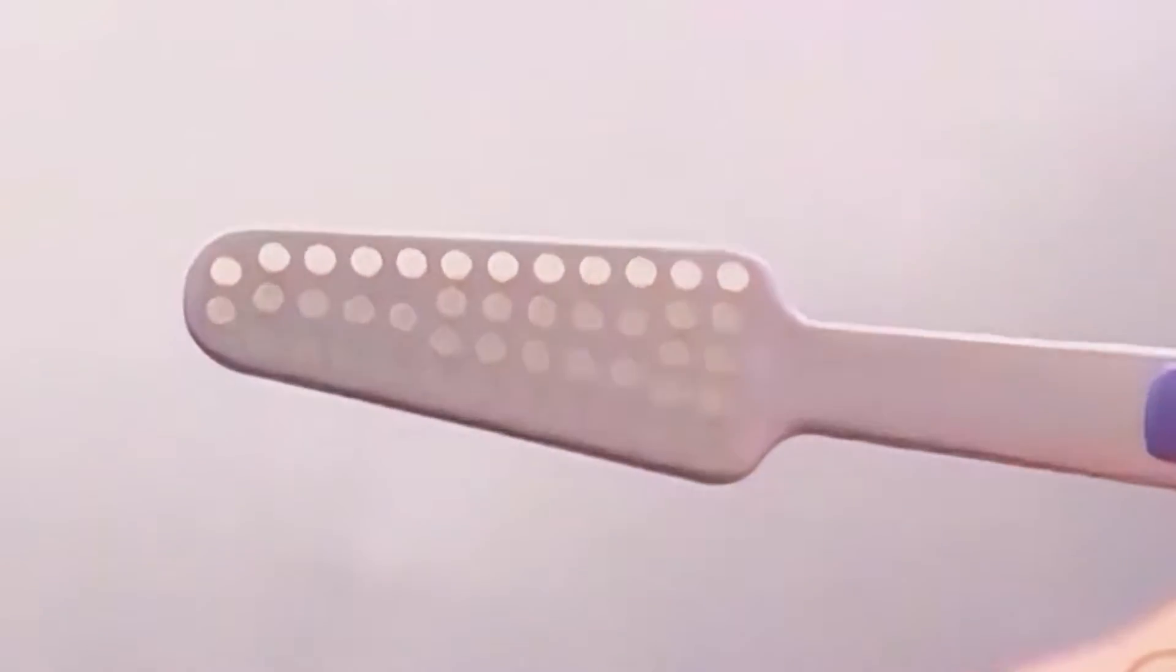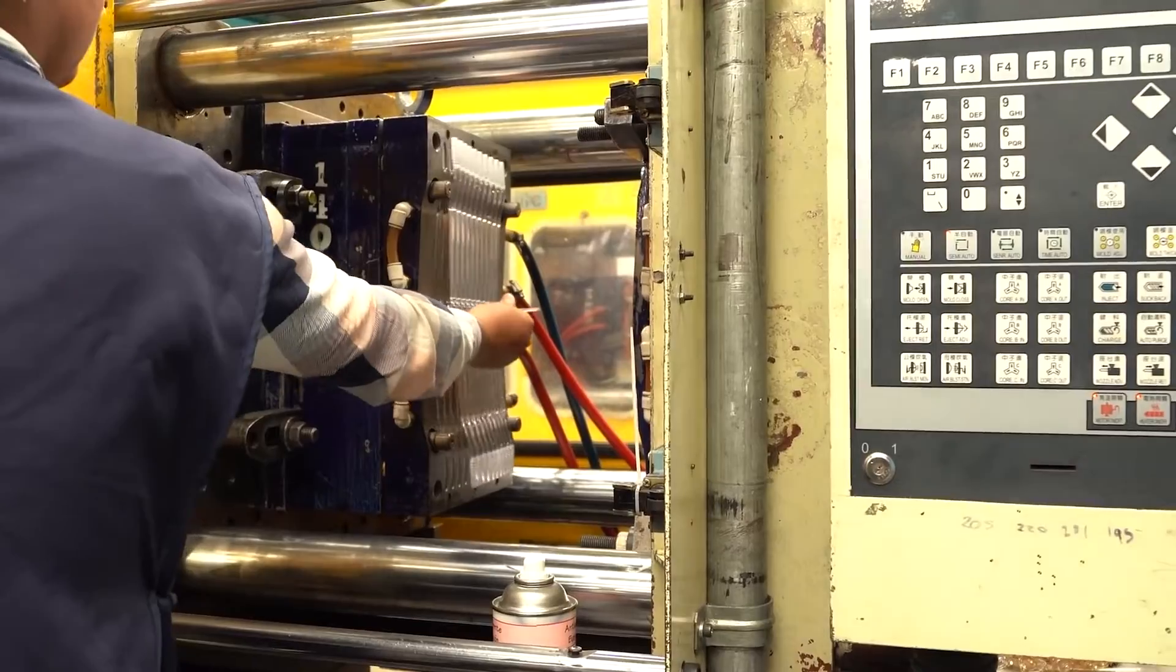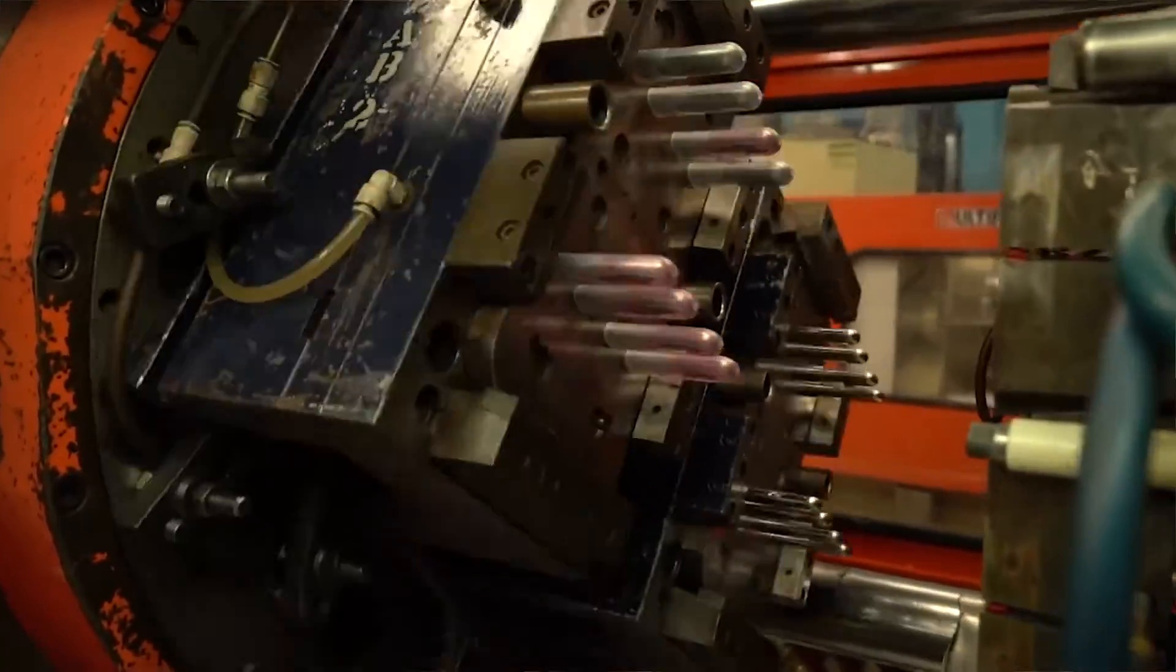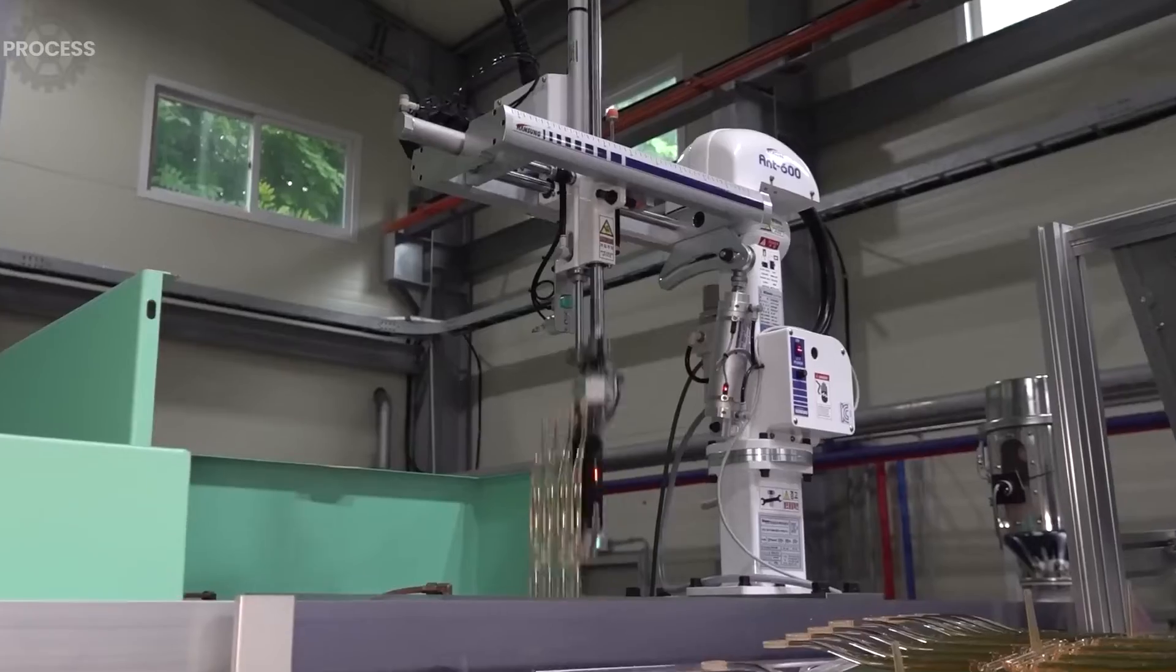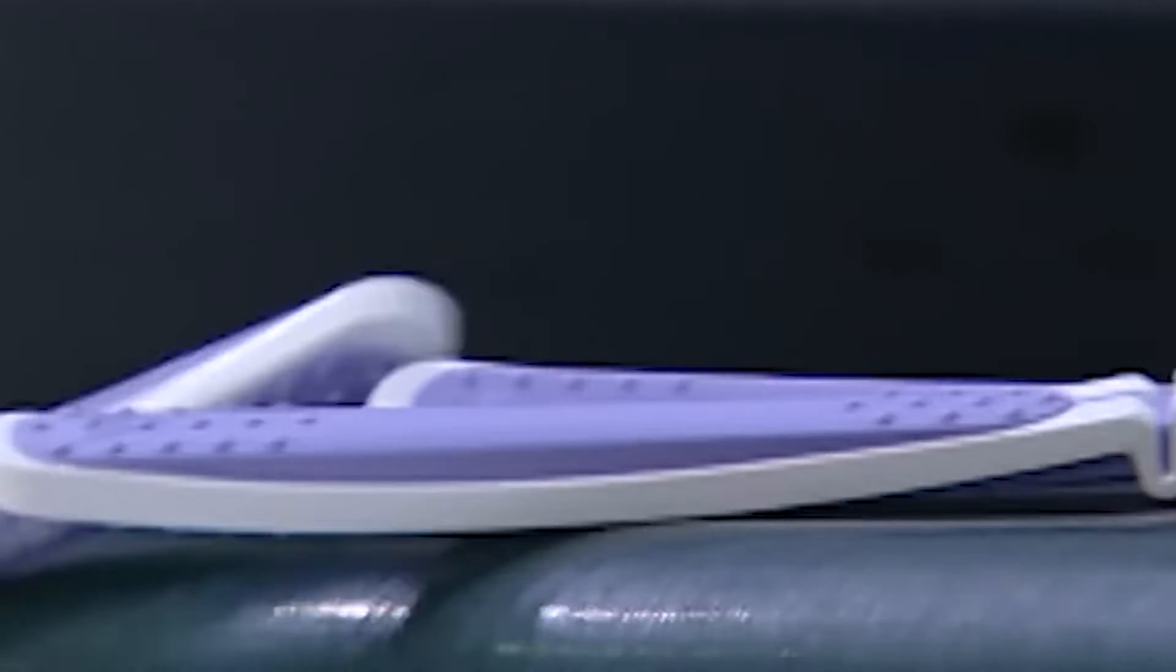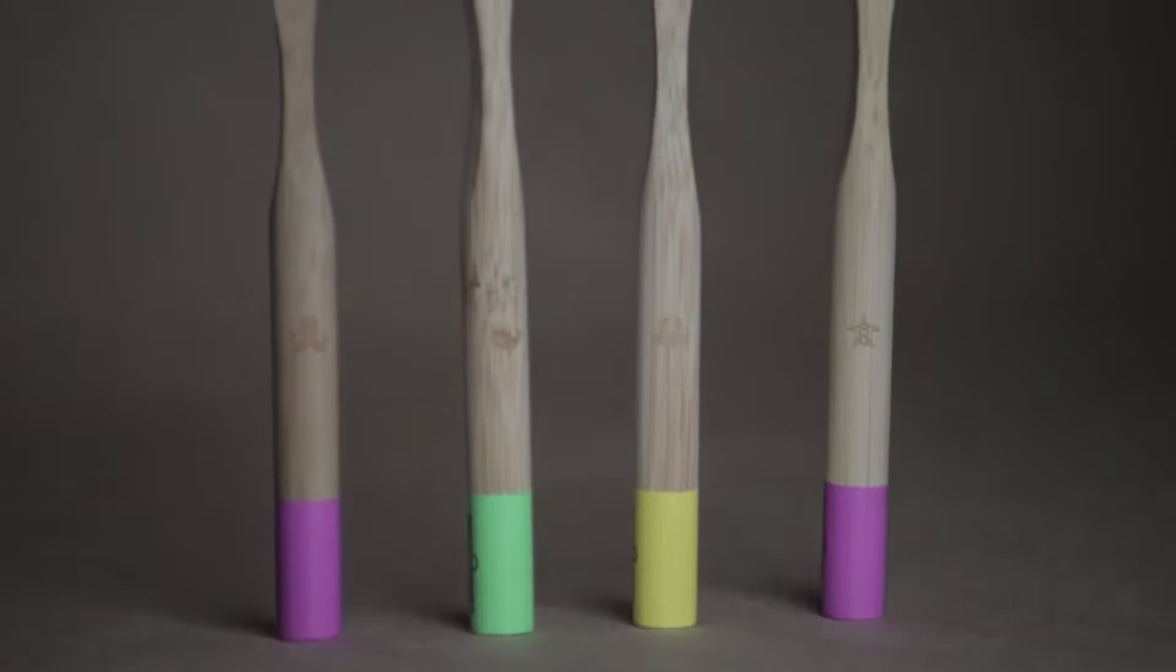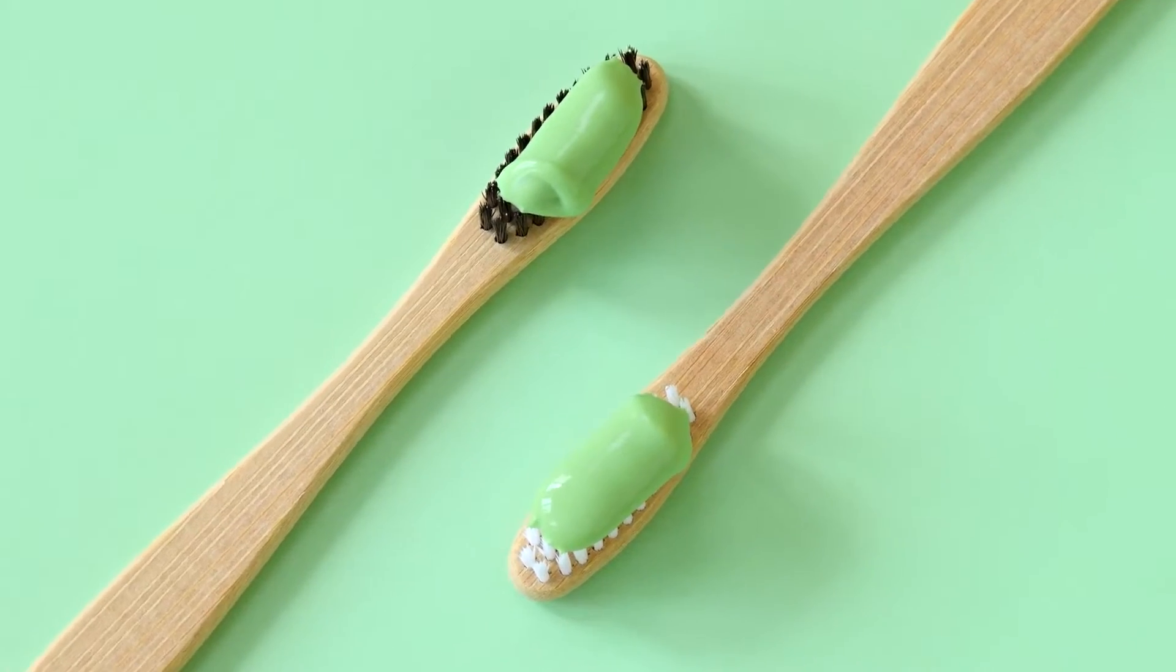The head of the handle can have up to 56 holes for bristles. As far as the speed of the process goes, the injection molding machine can pump out ten handles every 35 seconds, which comes out to 27,000 handles every 24 hours. Although plastic handles have become a sort of industry norm, bamboo handles are also produced as an eco-friendly choice and have become increasingly popular in recent years.